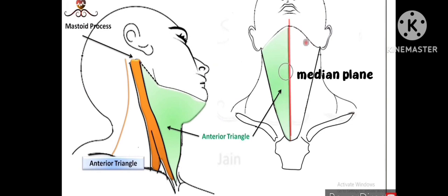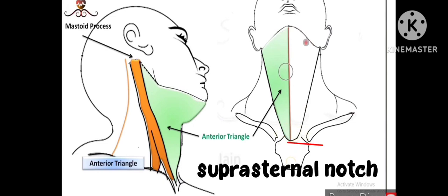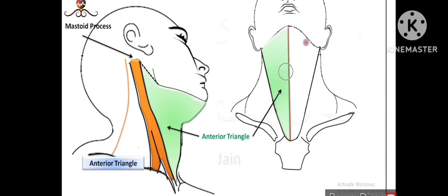Coming to the anterior triangle and its boundaries. The first boundary is the median plane — an imaginary line in the center of the neck. The second is the anterior border of the sternocleidomastoid muscle. The base is the body of the mandible. The apex is the meeting point of the sternocleidomastoid muscle and the midline. Anterior boundary is the imaginary median plane, and posterior boundary is the anterior border of sternocleidomastoid muscle.